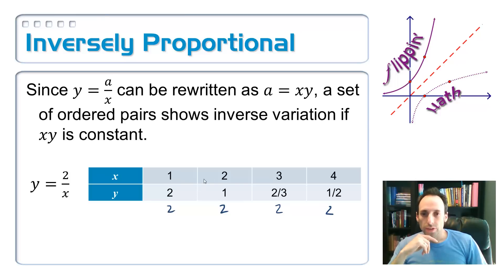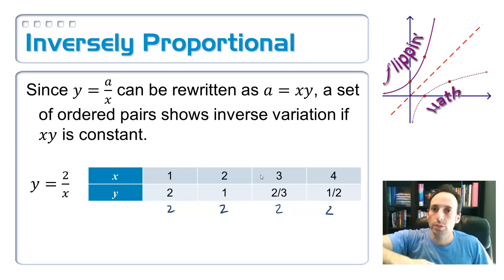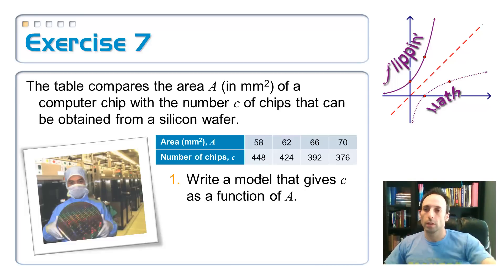Also, look at this. As x is getting bigger and bigger and bigger, what's happening to y's? They're getting smaller and smaller and smaller. Remember, that's what happens with inverse variation. As one variable goes up, the other one goes down.